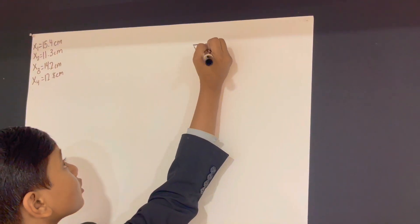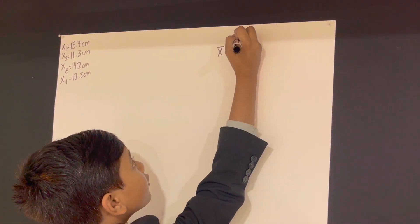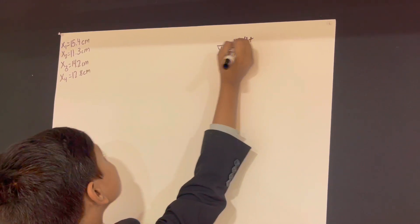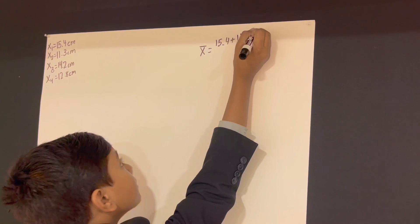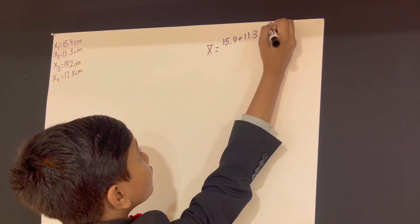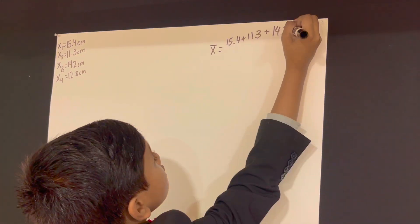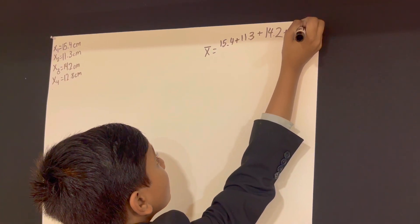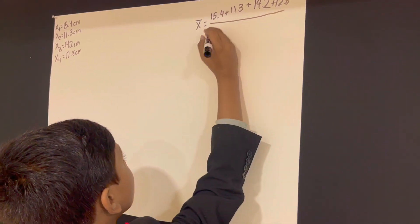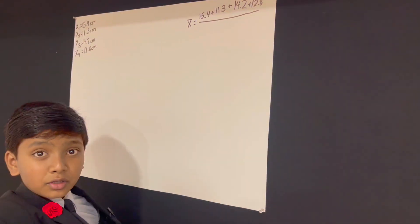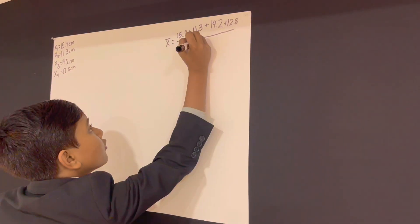So our mean here is going to be x1 which is 15.4 plus x2 is 11.3 plus x3 is 14.2 plus x4 is 12.8, divided by how many measurements did we take? Un, dos, tres, quattro. Four.